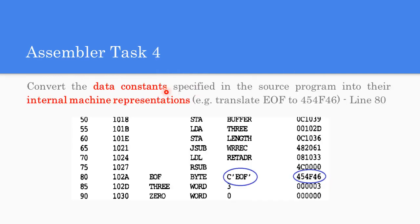The next task is converting data constants to machine representation. For example, the character constant EOF is converted to its ASCII equivalent 454F46, where each character E, O, F is represented in ASCII format. The assembler performs this conversion for all data constants in the source program.